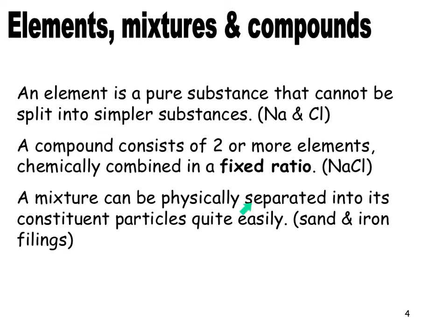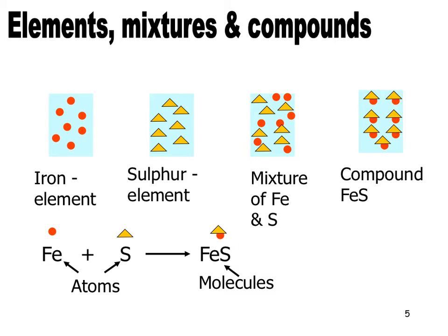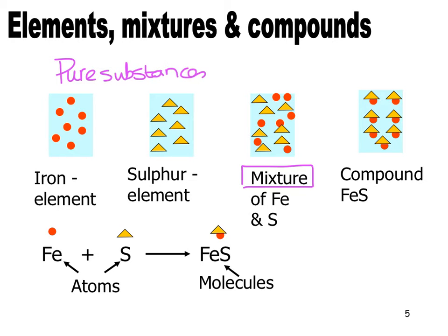A mixture can be physically separated into its constituent particles quite easily. For example, if I had sand and iron filings, I could bring a magnet in and take out the iron filings. This picture shows you the differences — iron is an element straight off the periodic table, sulfur is an element straight off the periodic table, both pure substances. I can take iron and sulfur and mix them into one container, and that is a mixture. I haven't broken or made any new bonds; they're just in the same container.